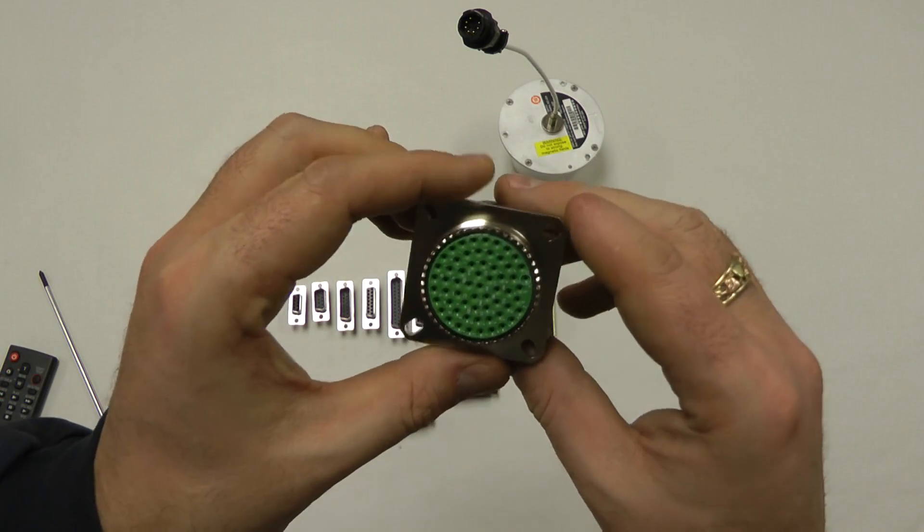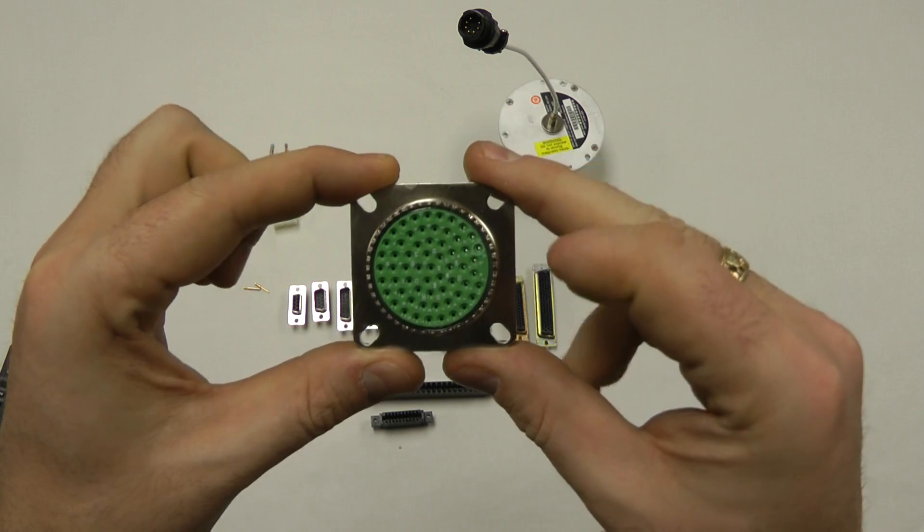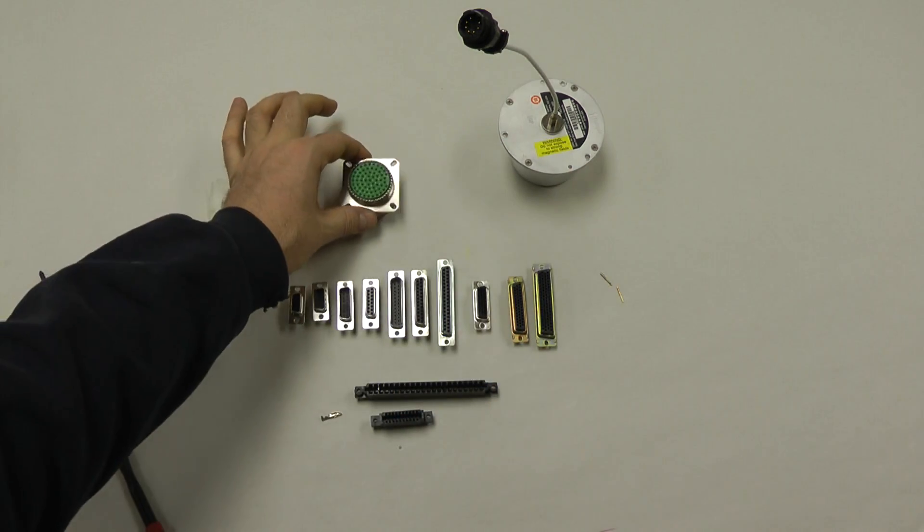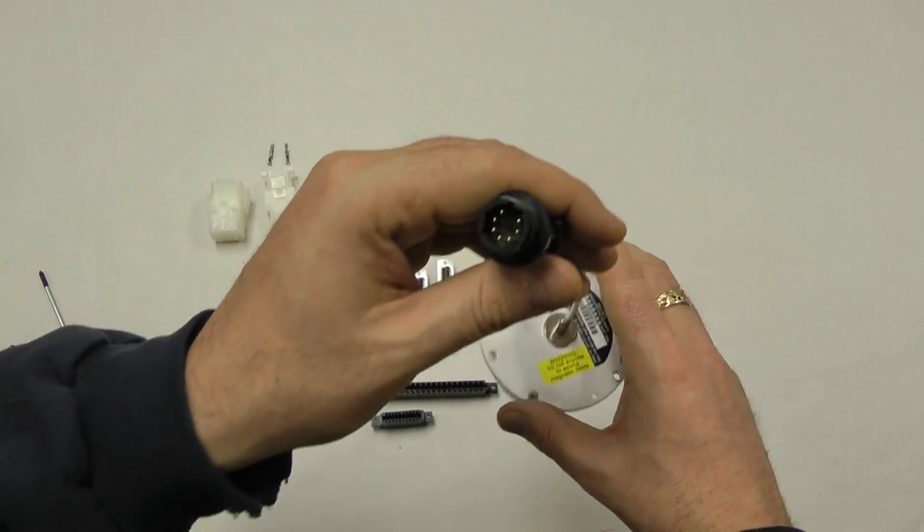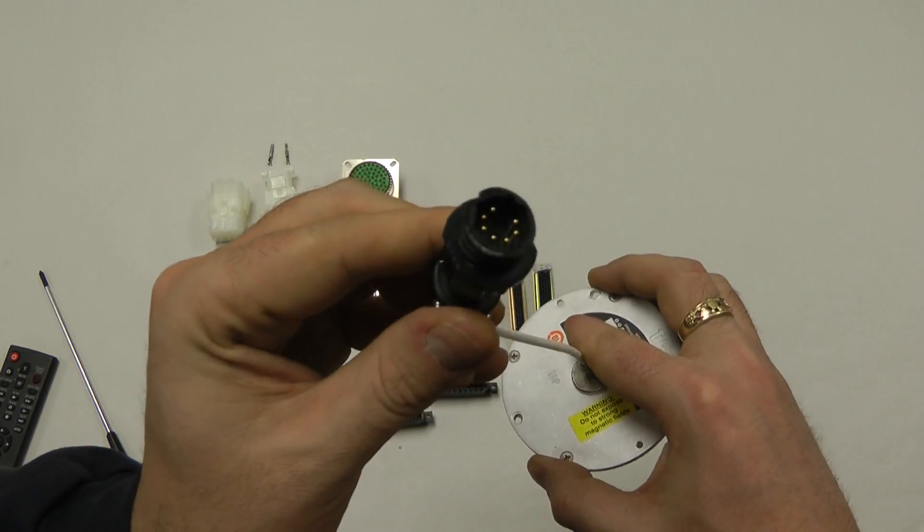These are circular connectors. They come in plastic or metal, sometimes referred to as cannon plugs. They can be in pressurized or non-pressurized installations. Also CPC for circular plastic connector, which is one that we see here. It's plastic, circular in shape. They come in a variety of series and use a variety of different pins.